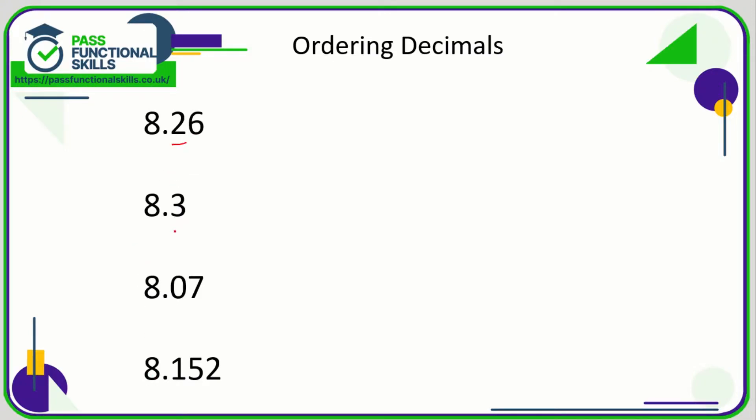So what we need to do is look at the second digit. We've got a two, a three, a zero, and a one. Let's say we are going to put them from smallest to largest. Two is less than three, so at the moment 8.26 is less than 8.3. But 8.07—zero is less than two—so 8.07 is the smallest number so far.